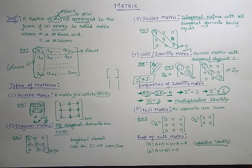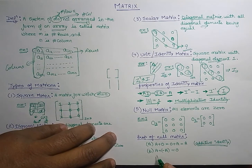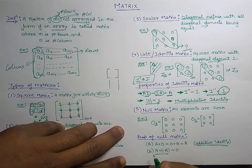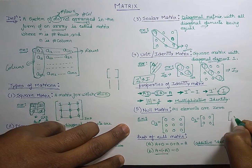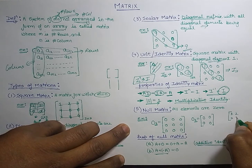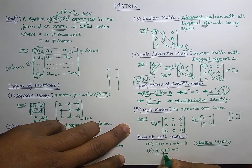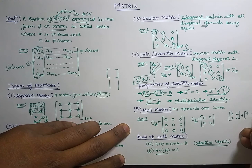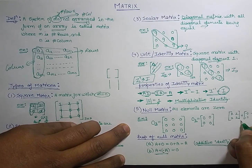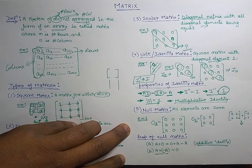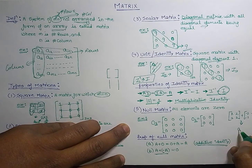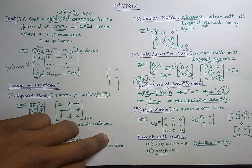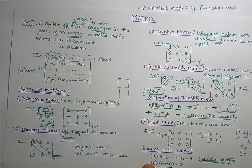Remember: the identity matrix is a multiplicative identity and the null matrix is an additive identity. If we add two matrices with opposite signs — for example, matrix A with elements all equal to two, added to the same matrix with all elements equal to minus two — the result is a null matrix with all elements zero.